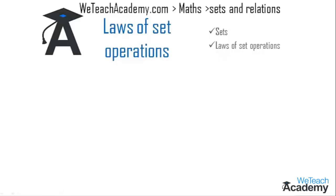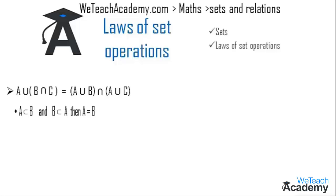The first law is: A union (B intersection C) is equal to (A union B) intersection (A union C). We already know the condition that if A is a subset of B and B is a subset of A, then A is equal to B. Using this condition, let us prove this law by first proving A union (B intersection C) is a subset of (A union B) intersection (A union C).